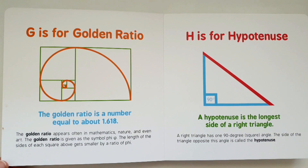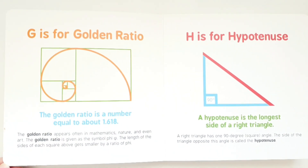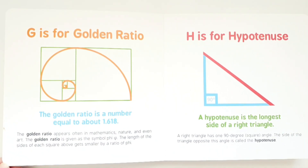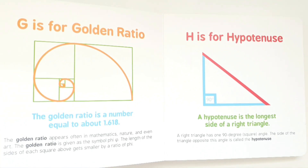G is for golden ratio. The golden ratio is a number equal to about 1.618. The golden ratio appears often in mathematics, nature, and even art. The golden ratio is given as the symbol phi. The length of the sides of each square gets smaller by the ratio of phi.